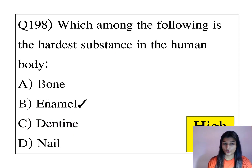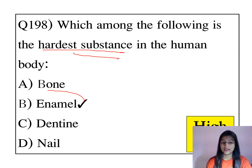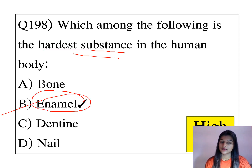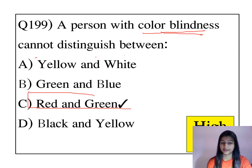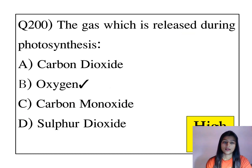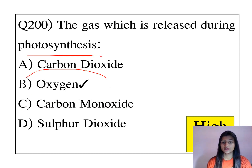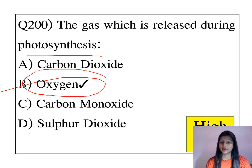Which among the following is the hardest substance in the human body? Tooth enamel is the hardest substance. A person with color blindness cannot distinguish between red and green. The gas which is released during photosynthesis is oxygen.